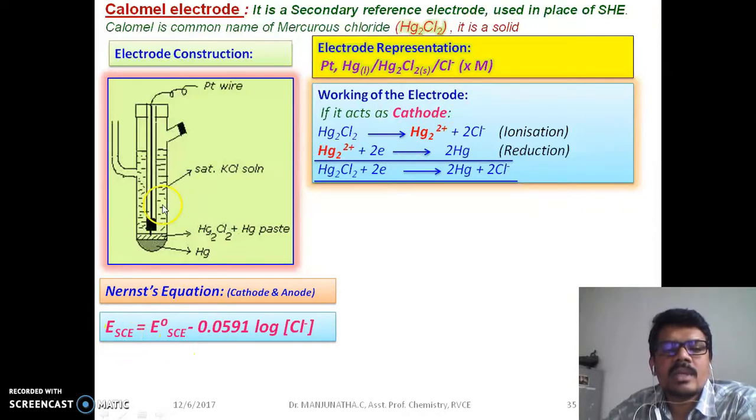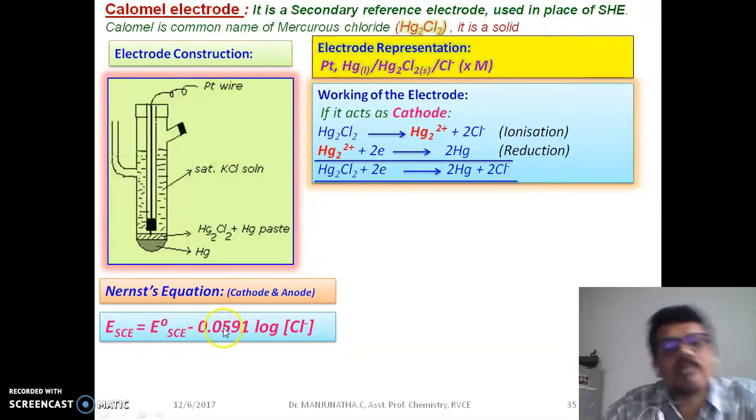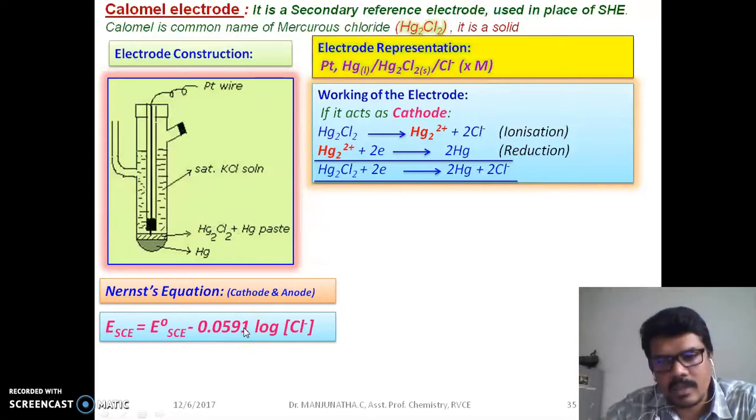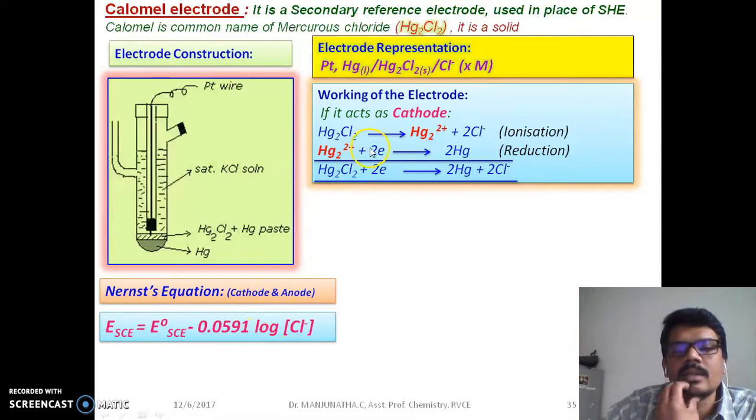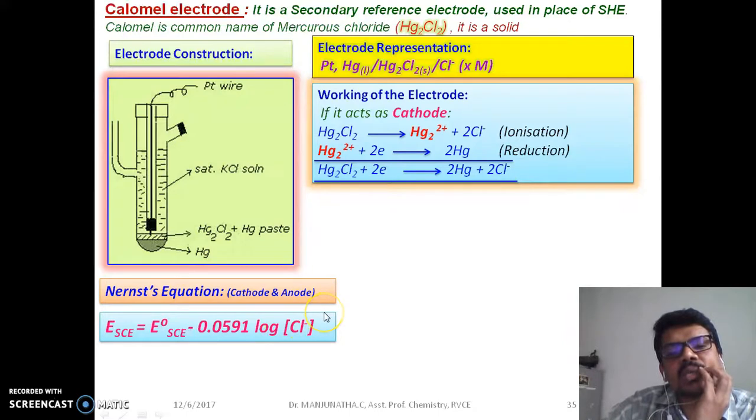This is the Nernst equation. Since we are taking saturated KCl, this is called electrode potential of saturated calomel electrode is equal to standard electrode reduction potential E0 minus 0.0591. This is at 25 degree centigrade, that means 298 Kelvin. Because the charge is one, the number of moles of electrons accepted by one mole of mercury chloride is two. The value of N is two. And log Cl- square we get.